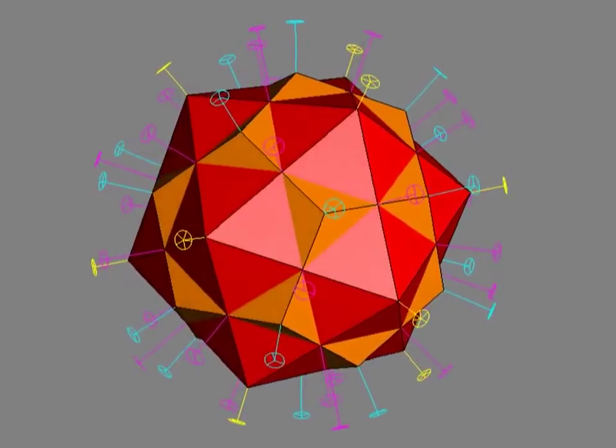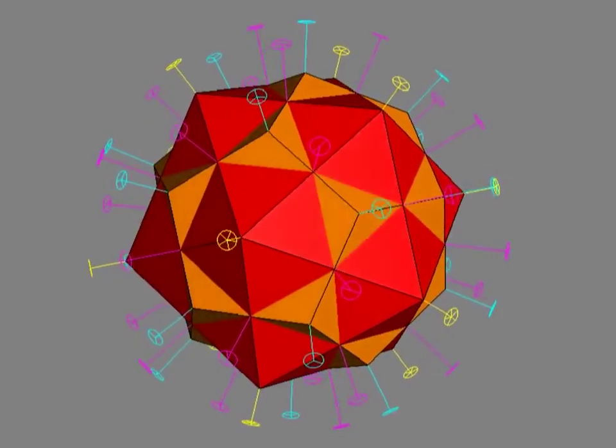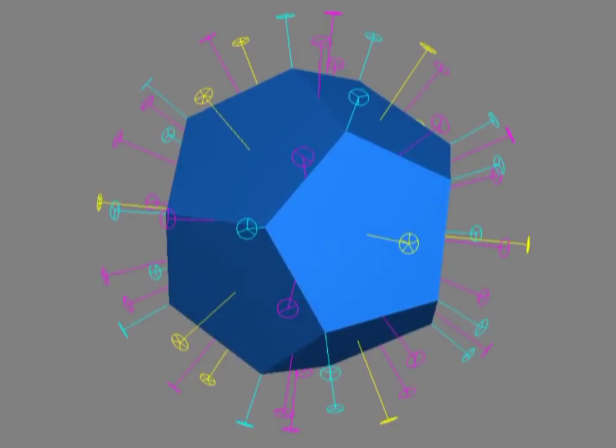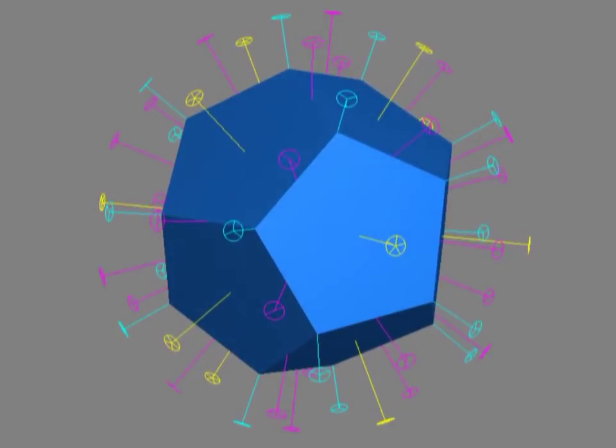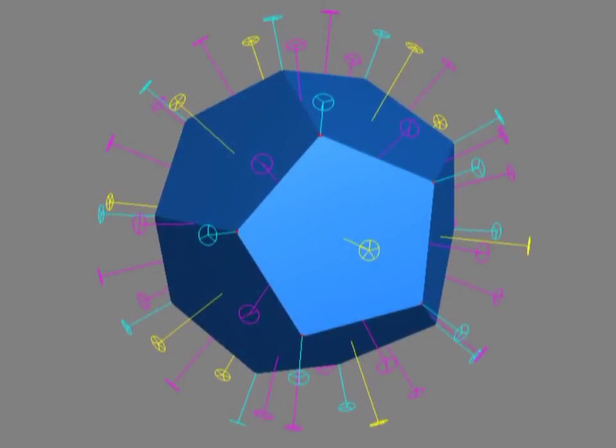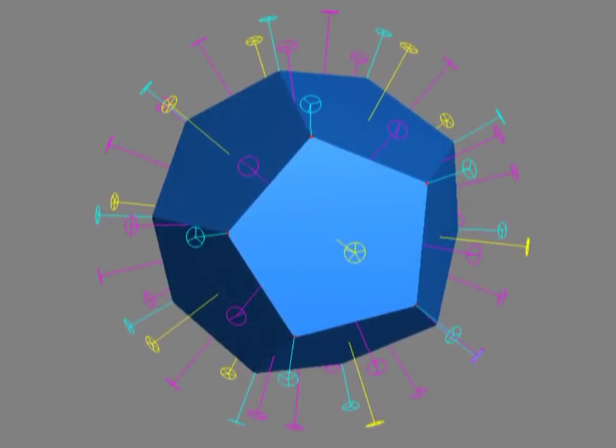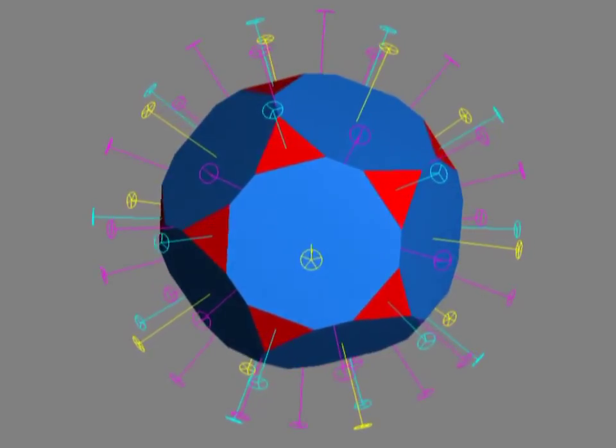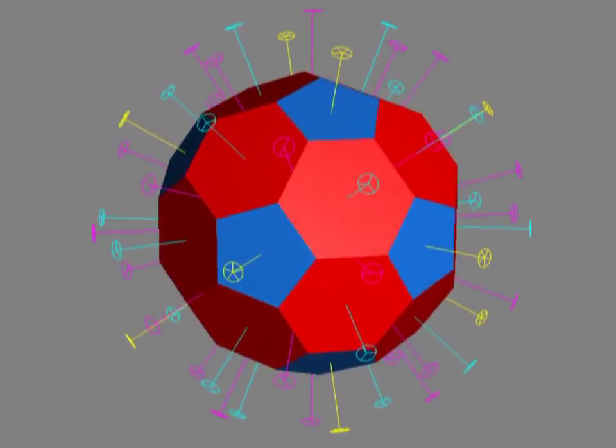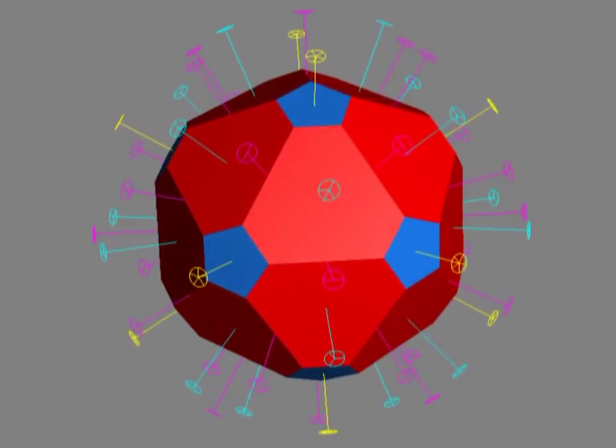My starting point for the sculpture is just this set of symmetry axes. You can imagine constructing planes orthogonal to each 5-fold axis, a unit distance from the origin, then taking the intersection of the half-spaces defined by those 12 planes to construct the dodecahedron. Similarly, to get the icosahedron, we can intersect 20 half-spaces defined by the family of planes orthogonal to the 3-fold axes.